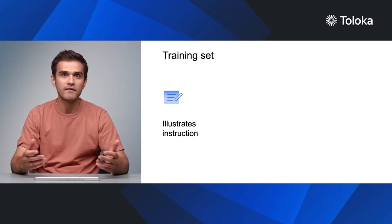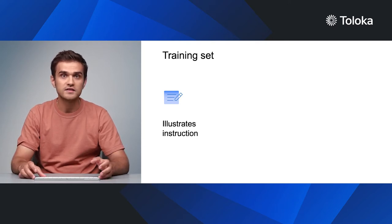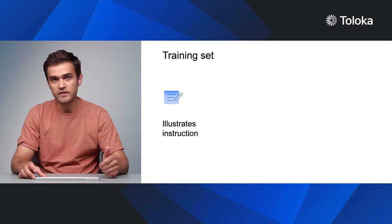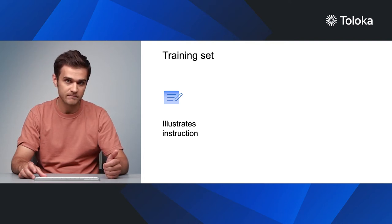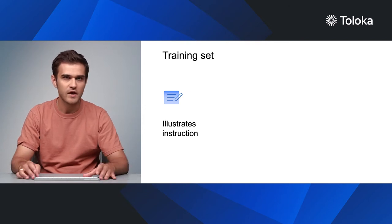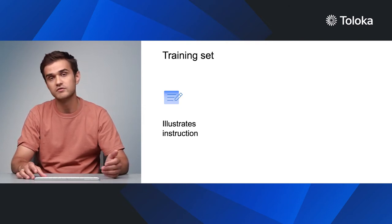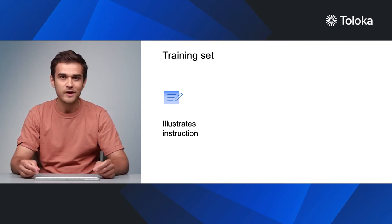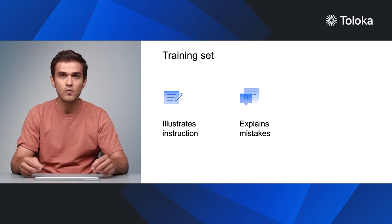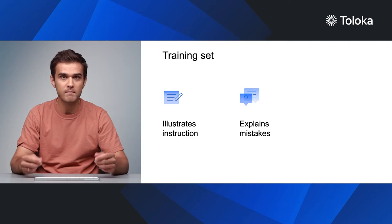Now that we have selected our potential performers, they need to be trained. In our context, training involves a set of tasks with comments that performers will see when they give an incorrect answer. An effective training set should demonstrate all the guidelines from the instructions, even the simplest ones. You can use several examples for more complex guidelines. Explain why a given answer is correct or not — even better, reference a particular section of the instructions. This gives participants an extra reason to re-read and absorb the instructions rather than click through the training as quickly as possible.